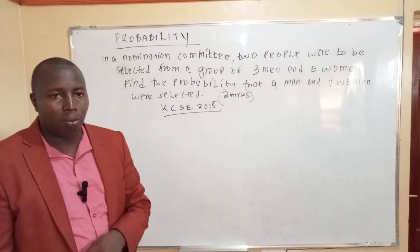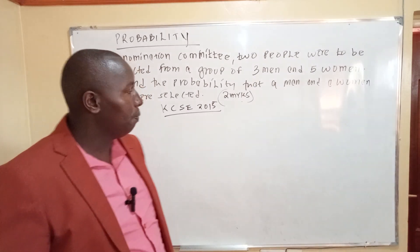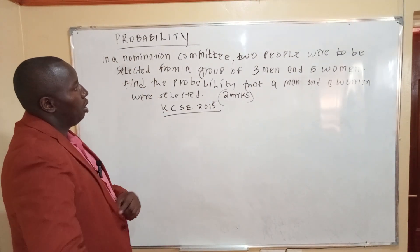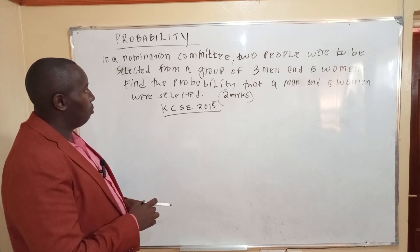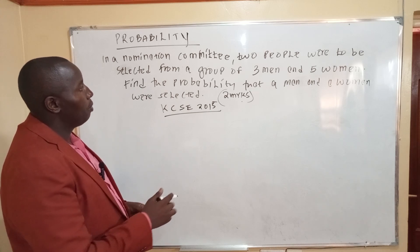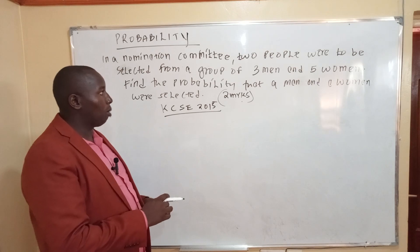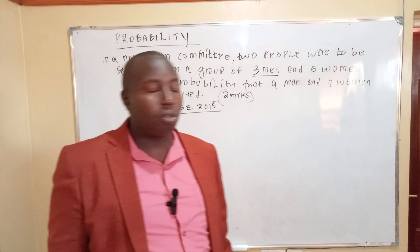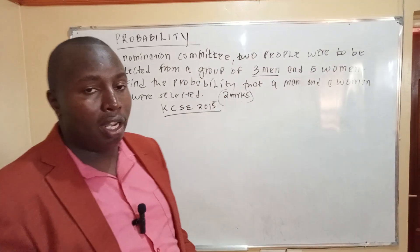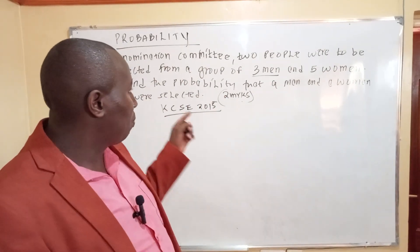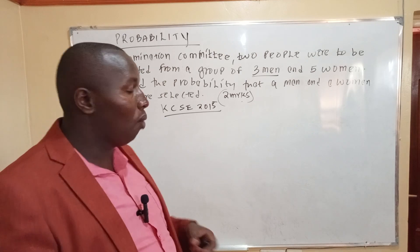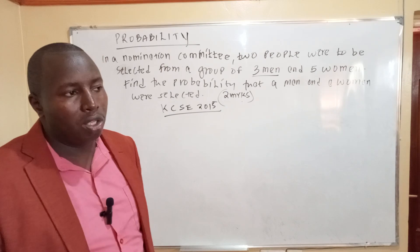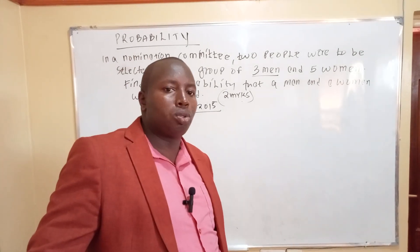Let's see what the examiner was testing in this question. In a nomination committee, two people are to be selected from a group of three men and five women. Find the probability that a man and a woman were selected. You can use a tree diagram to work out this question.